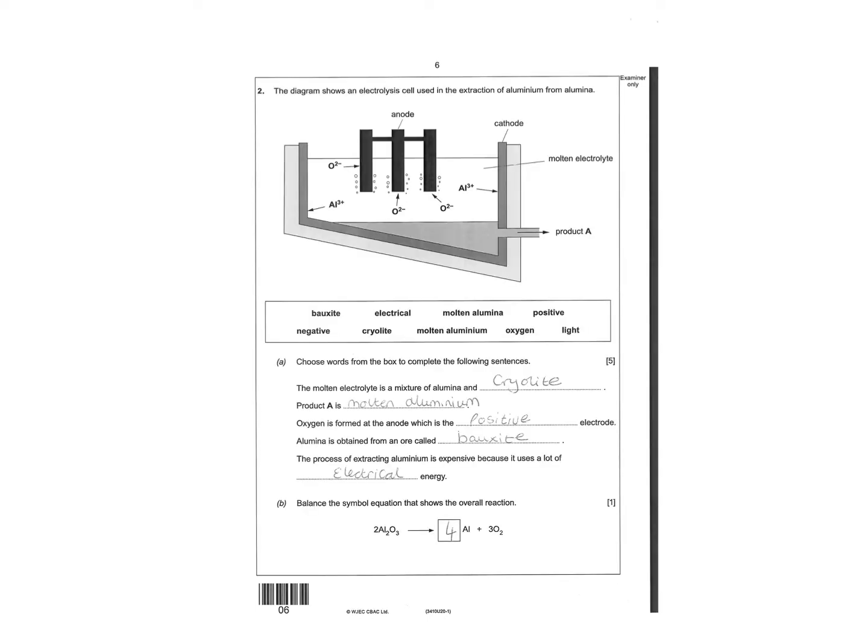Blank page, don't need to do anything there. Then electrolysis of aluminum. The molten electrode is a mixture of aluminum and cryolite. Cryolite is added to lower the melting point.